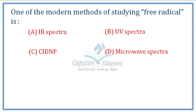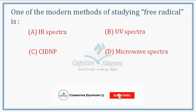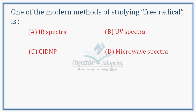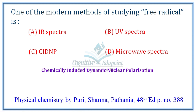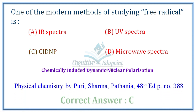Question: One of the modern methods of studying free radicals is? This is an NMR advanced topic — NMR free radicals relates to ESR spectroscopy. IR, UV, and microwave do not relate to free radicals, so by elimination, the correct answer is Chemically Induced Dynamic Nuclear Polarization technique — CIDNP. The correct answer is C.